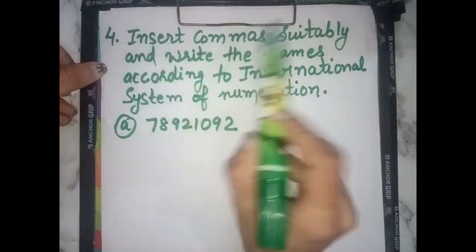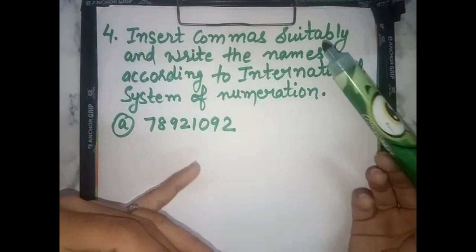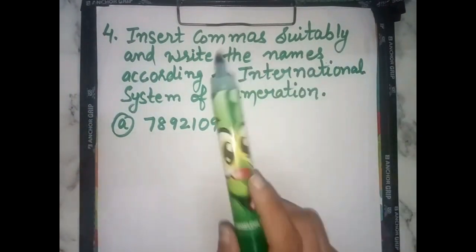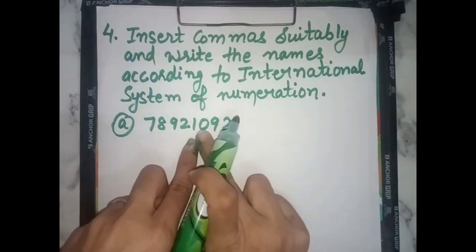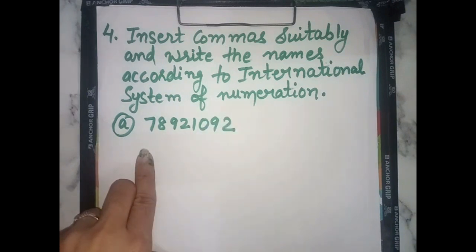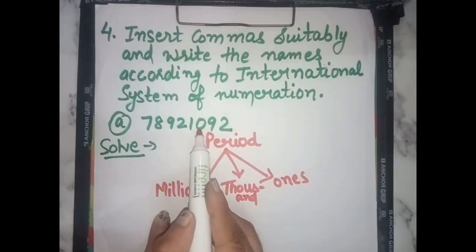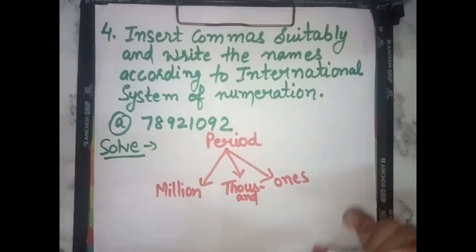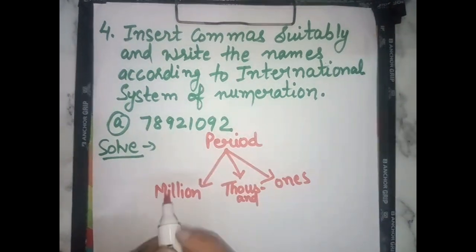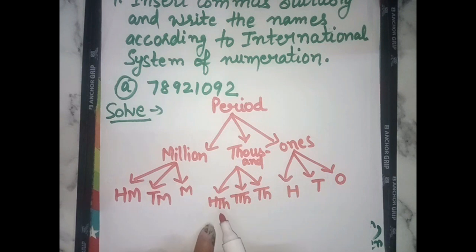Part 4: Insert commas suitably and write the name according to the International System of Numeration. In the International system, we put the number into periods and then place commas. The International system has three periods: ones period has three place values, thousands period has three place values, and millions period has place values: ones, thousands, ten thousands, hundred thousands, millions, ten millions, hundred millions.